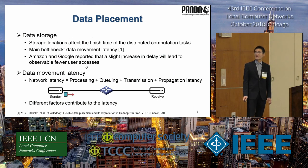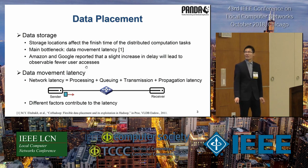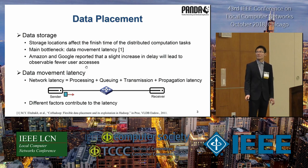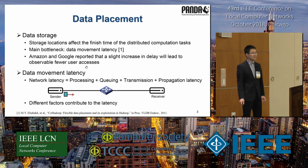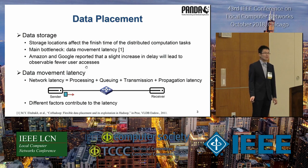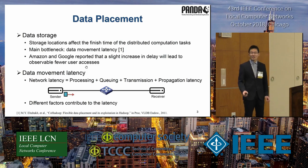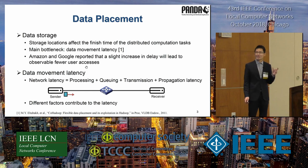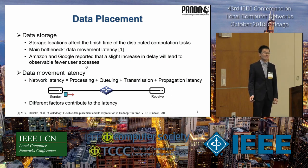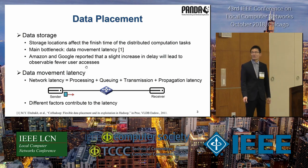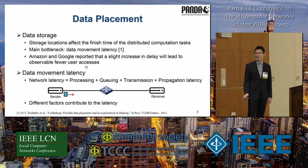The key point of data placement is the storage locations of data items. It has been reported that storage locations affect the finishing time of distributed computation tasks. The main bottleneck is data movement latency. Major cloud providers such as Amazon, Google, and Microsoft have reported that a slight increase in overall latency may lead to fewer user accesses and significant potential revenue loss. Different factors contribute to latency, such as processing, queueing, transmission, and propagation latency.